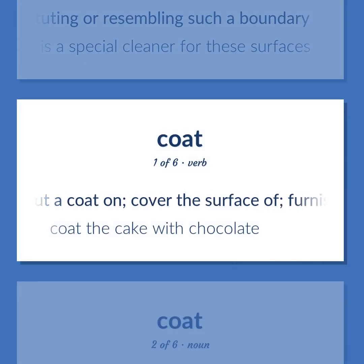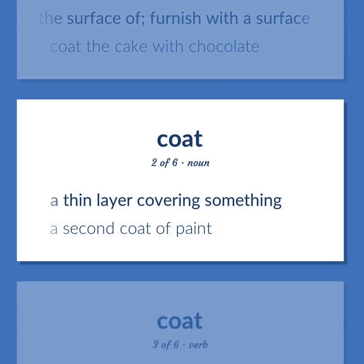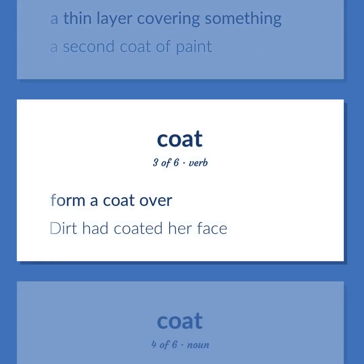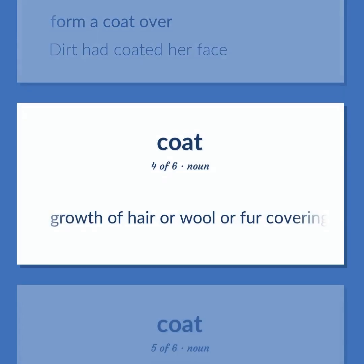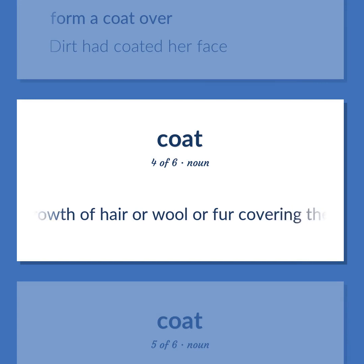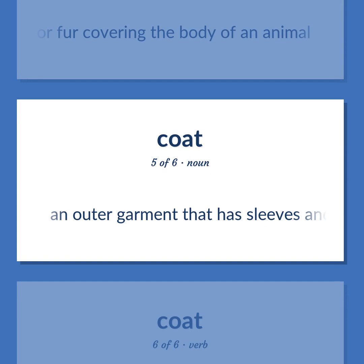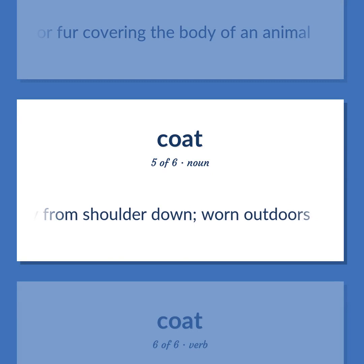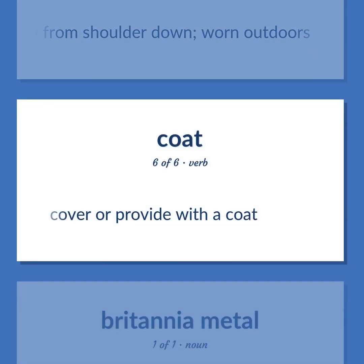Coat (verb): put a coat on; cover the surface of; furnish with a surface — coat the cake with chocolate. Coat (noun, sense 1): a thin layer covering something — a second coat of paint. Coat (verb, sense 2): form a coat over — 'dirt had coated her face.' Coat (noun, sense 2): growth of hair or wool or fur covering the body of an animal. Coat (noun, sense 3): an outer garment that has sleeves and covers the body from shoulder down, worn outdoors. Coat (verb, sense 3): cover or provide with a coat.